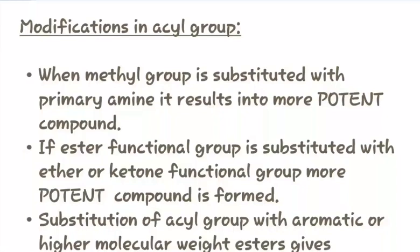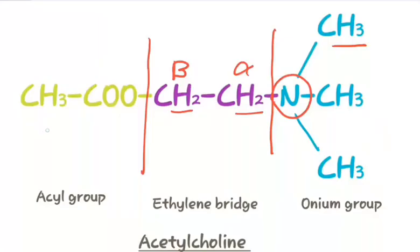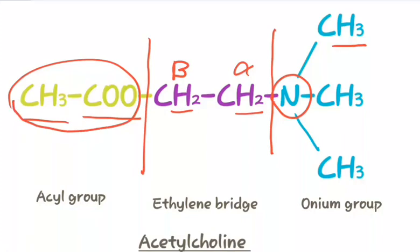Now let us study about the modifications in the acyl group. When the methyl group is substituted with a primary amine, it results in a more potent compound. If the ester functional group is substituted with an ether or ketone functional group, a more potent compound is formed. Substitution of the acyl group with aromatic or higher molecular weight esters gives antagonist activity instead of agonist activity.